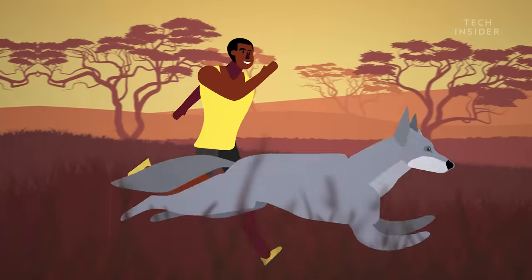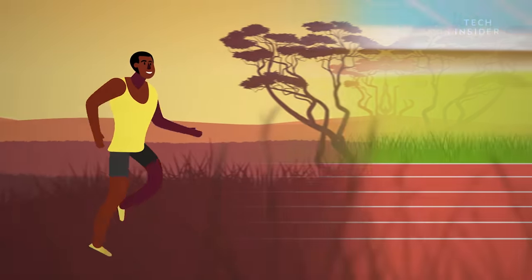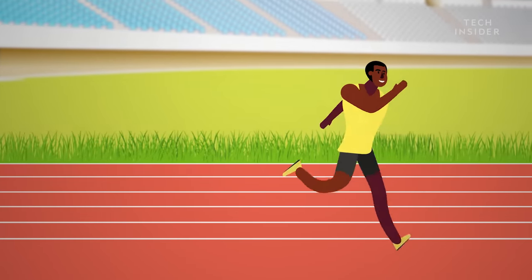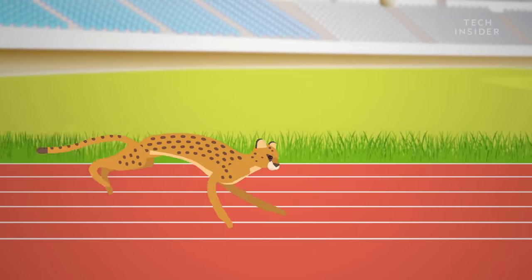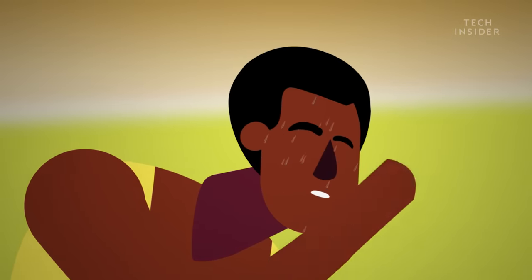That's right, when it comes to endurance, we can outrun wolves, cheetahs, and even horses. Now, in the beginning, humans fall short because we're lousy sprinters. Case in point, Usain Bolt couldn't outrun a cheetah in the 100 meter dash if he wanted to, and he tried.